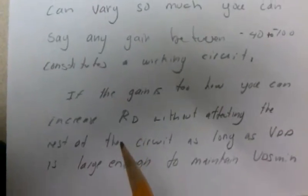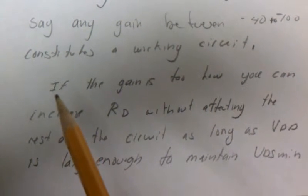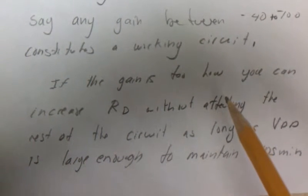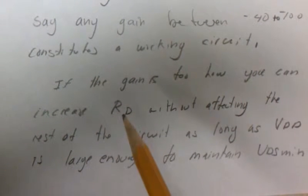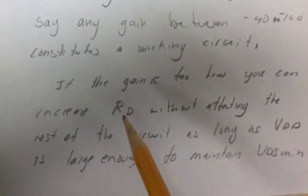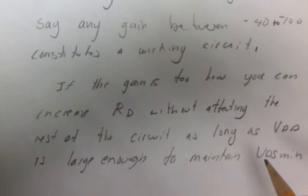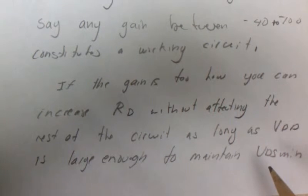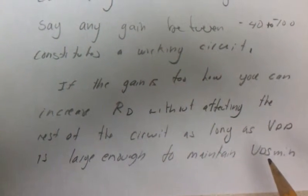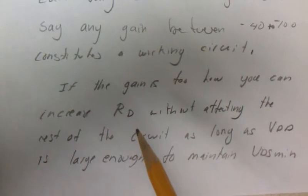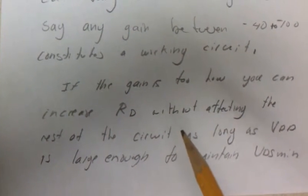Just one last thought: if the gain is too low when you measure it, the easiest thing to bring it into compliance is just to start increasing RD. As long as your VDD was large enough to make sure you maintain your VDS min for constant current source mode, otherwise known as saturation, you should be able to achieve and tweak whatever gain you want. It's just not a circuit that will give you the same thing on a production line.